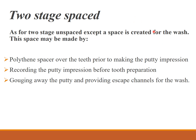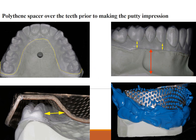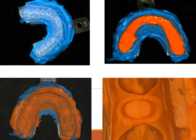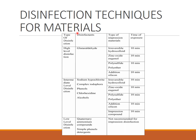The two-stage spaced technique is the one usually used in the department. A polythene spacer is placed over the teeth prior to making the putty index, creating space for the wash material, which makes it more accurate. The putty impression is made before tooth preparation. The polythene spacer is then removed, light body is loaded and placed back, and the accuracy is demonstrated on a model example.